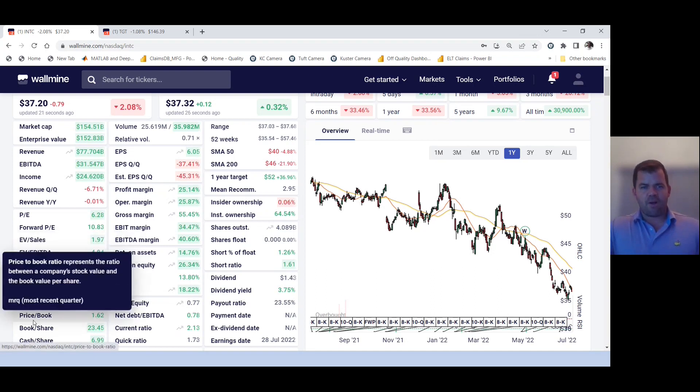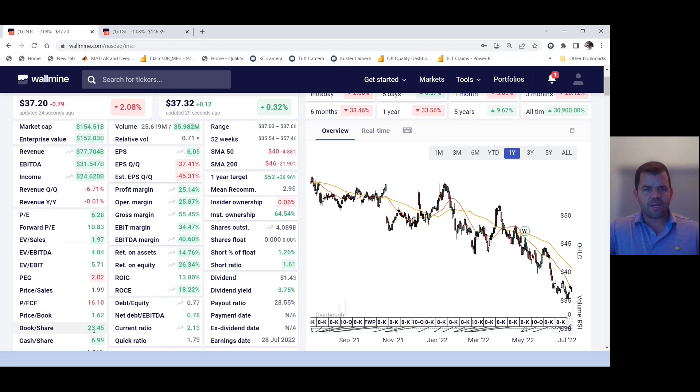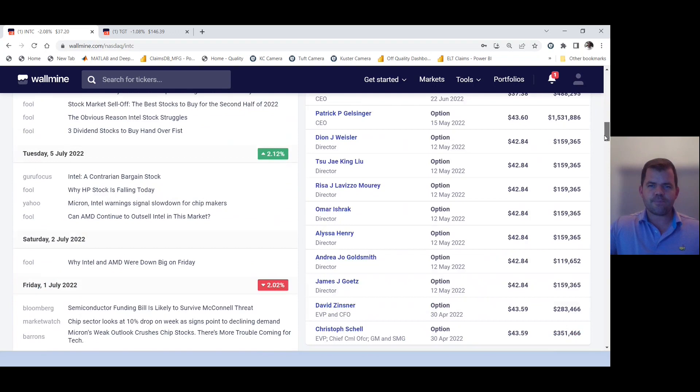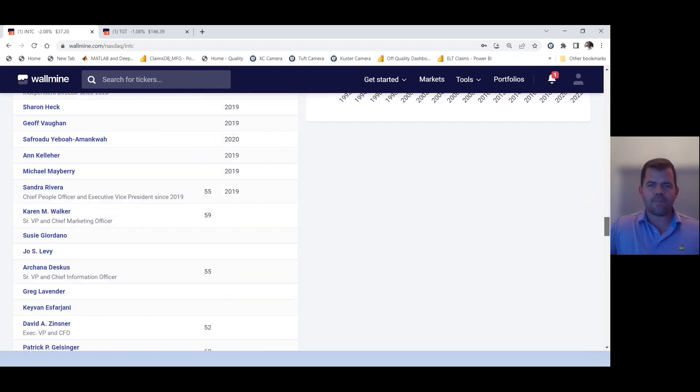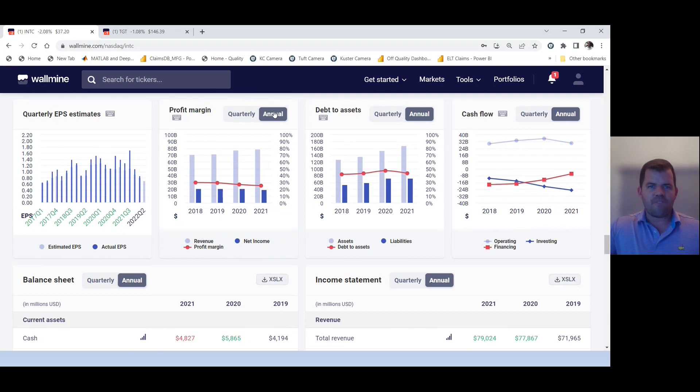So for the book value, if you see right here, it's $23.45 is the current book value for Intel. And they're selling for $37.20. And so that price to book is $1.62. So I'm going to put that in my formula in just a second. Now for the price to earnings, they have it here. They show $6.28. And they show a forward PE of $10.83. But like I told you earlier, what I'm going to do is look at the four-year average. So I'm actually going to scroll down here, right to the bottom, and I'm going to look at their profit margin.